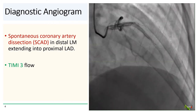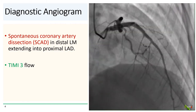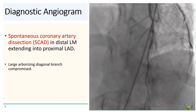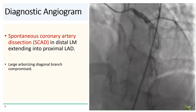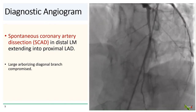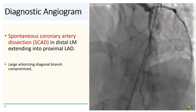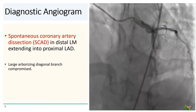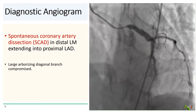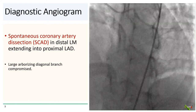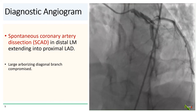Fortunately, there was still TIMI-3 flow down the LAD. Here is another view of the spontaneous coronary artery dissection. In this view, you can see that while there is still good flow in the LAD itself, flow in a very large arborizing diagonal branch has been severely compromised by the dissection flap.